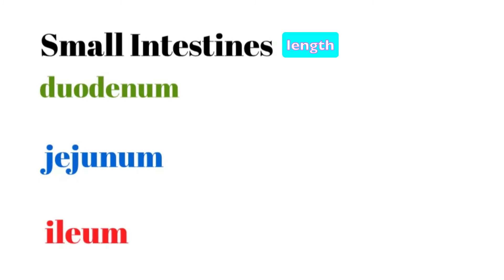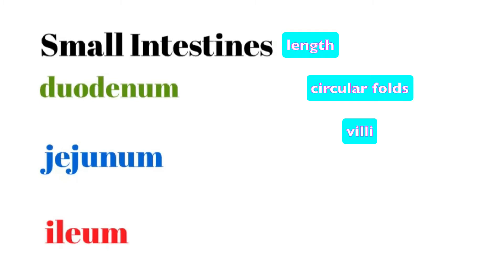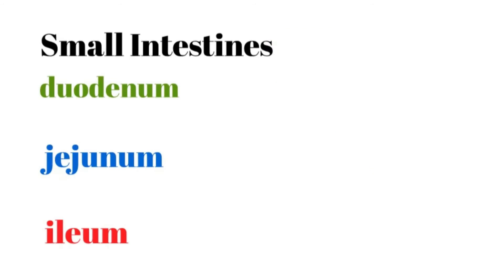The three additional mechanisms are: circular folds, which are ridges that run around the circumference of the small intestine; villi, which are finger-like projections; and microvilli, which we've looked at previously. So the four modifications aimed at increasing surface area in the small intestine are great length, circular folds, villi, and microvilli.